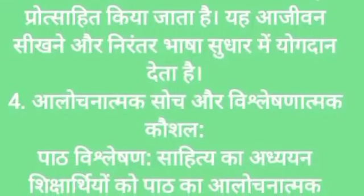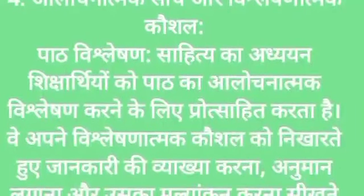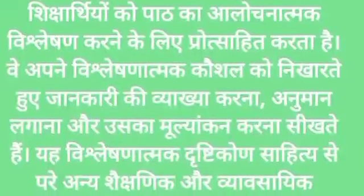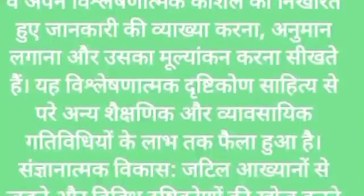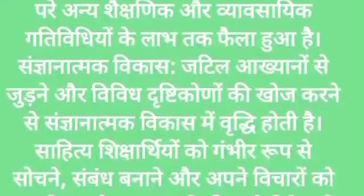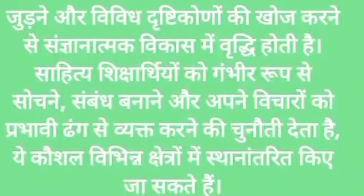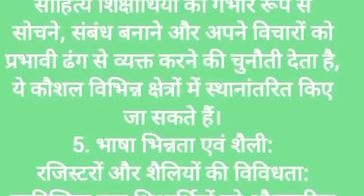Alochanatmak soch aur vishleshanatmak kaushal: Sahitya ka adhyayan shiksharathiyon ko path ka alochanatmak vishleshan karne ke liye protsahit karta hai. Yeh vishleshanatmak kaushalon ko nikharte hue jaankari ki vyakhya karna, anuman lagana aur uska mulyankan karna sikhate hain. Yeh vishleshanatmak drishtikon sahitya se parianchya shaikshnik aur vyavasayik gatividhiyon ke labh tak faila hua hai. Jatil akhyanaon se judne aur vivid drishtikonon ki khoj karne se sangyaatmak vikas mein vriddhi hoti hai. Sahitya shiksharathiyon ko gambhirata se sochne, sambandh banane aur apne vicharon ko prabhavi dhang se vyakt karne ki chunauti deta hai.